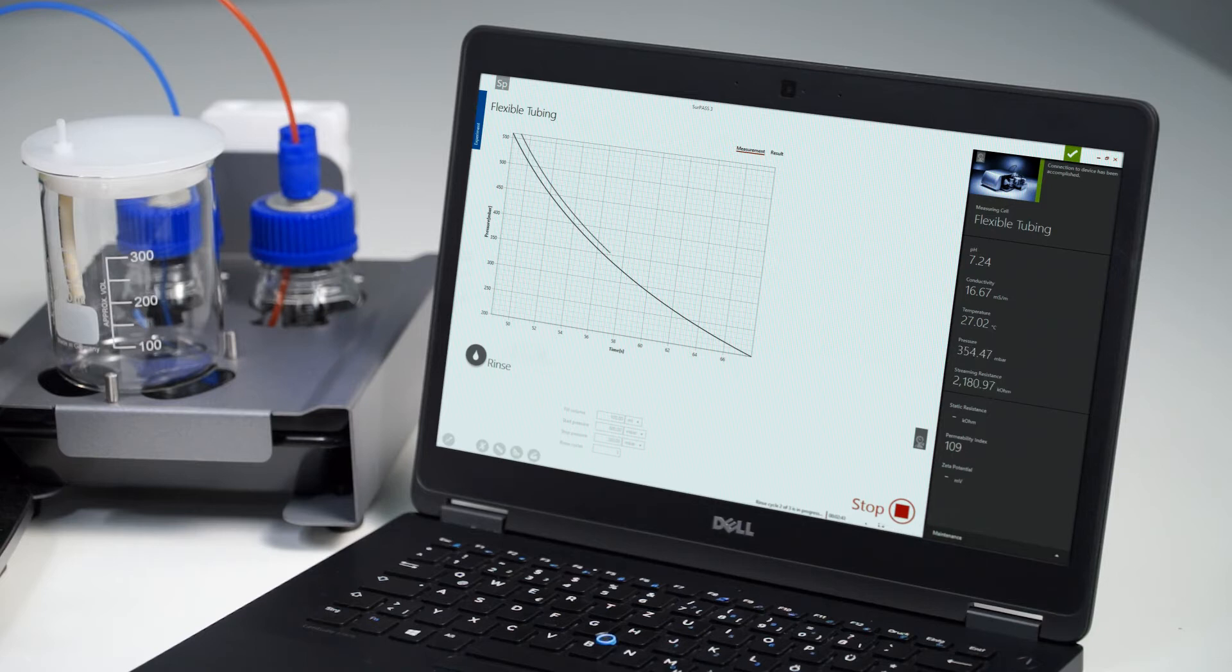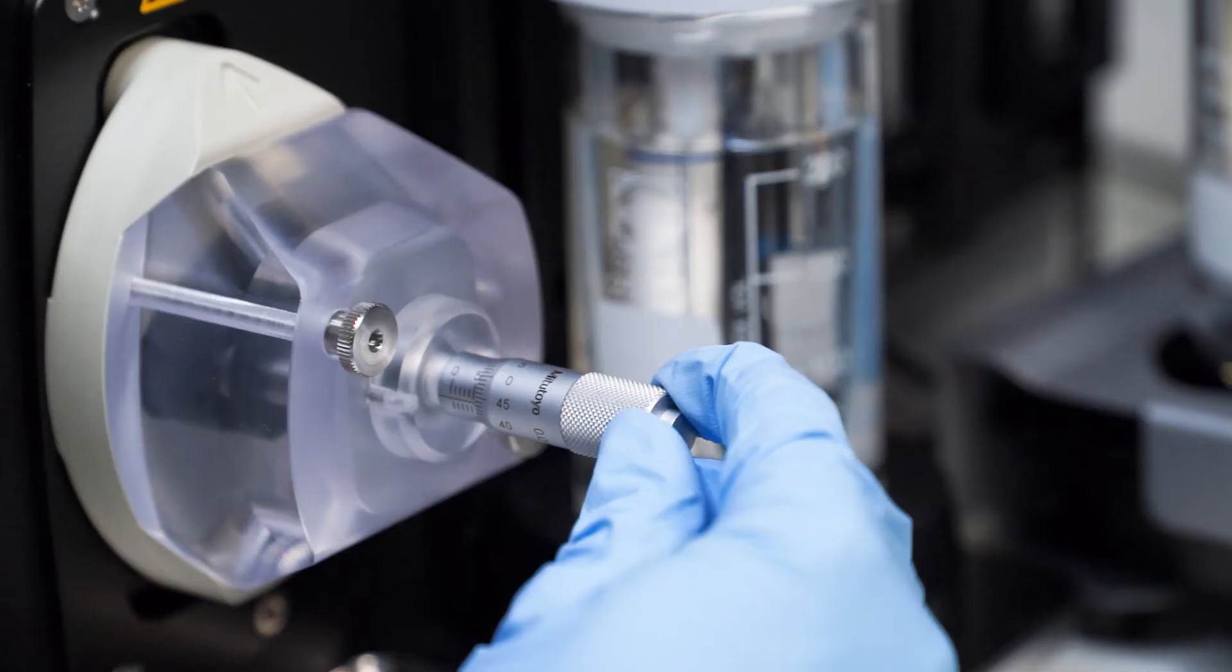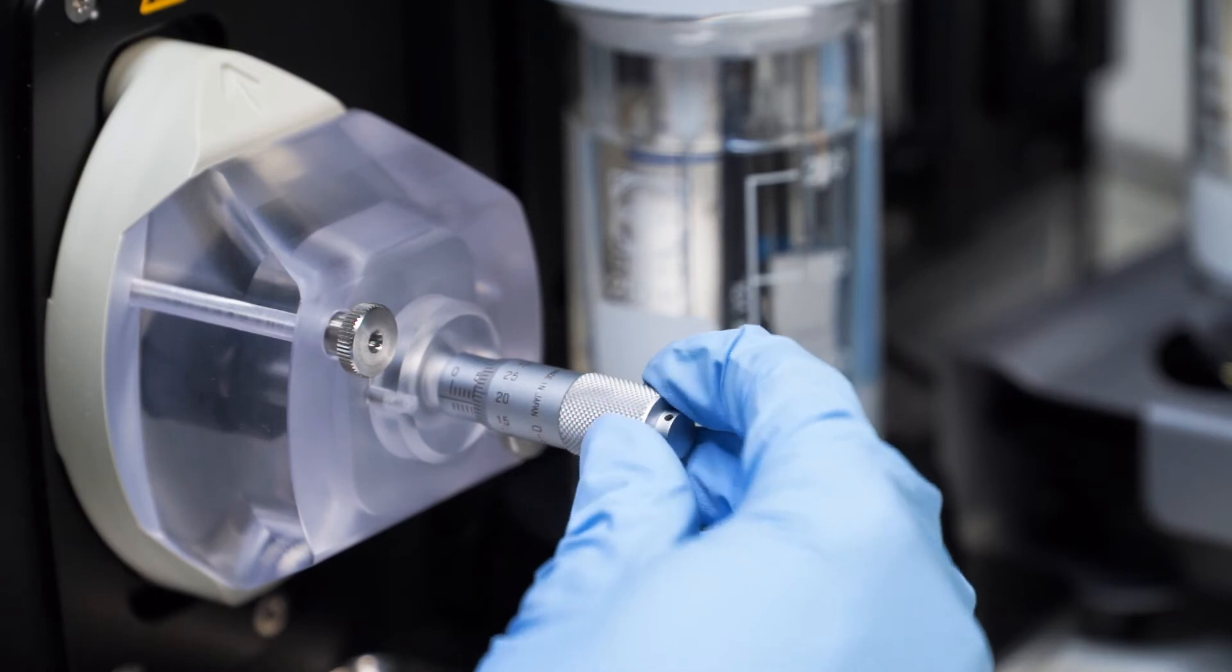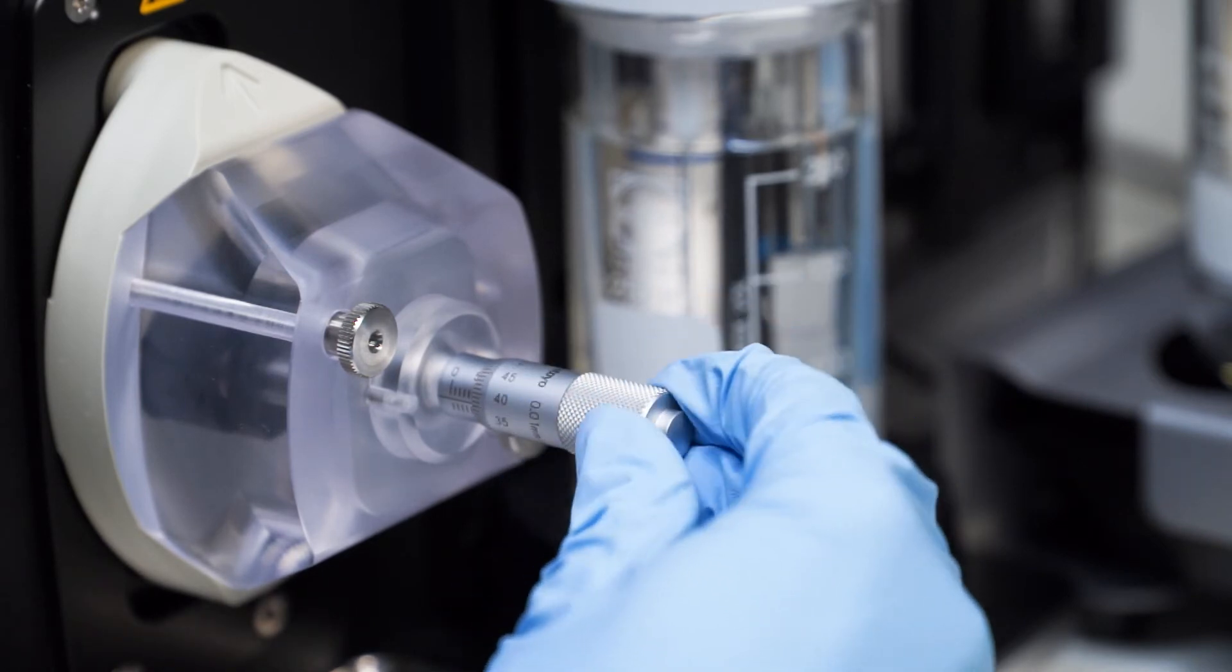Use the rinse cycle to adjust the compression of the tube sample while filling the tube channel with measuring fluid. Adjust the compression of the tube sample by rotating the adjustment knob.